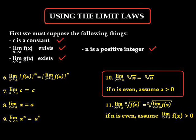Ten: the limit as x approaches a of the nth root of x is equal to the nth root of a. If n is an even number, we assume that a is greater than zero to avoid taking the root of a negative number.